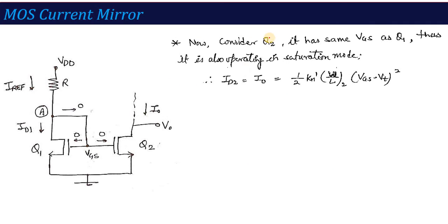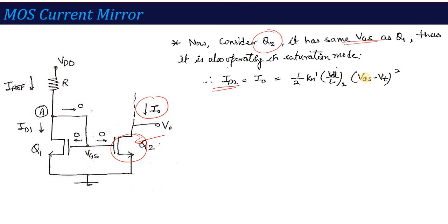Because transistor Q2 has the same VGS as Q1 — both Q1 and Q2 have the same voltage — Q2 will also operate in the saturation region. In that case, we can write the drain current I0 as: I0 = ½ · k · (W/L)₂ · (VGS − VT)². Now if I calculate the ratio of both currents — what is I0 divided by I_REF, i.e., ID2 divided by ID1?